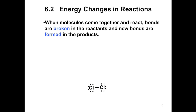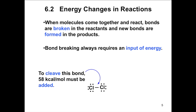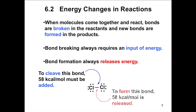For energy changes in reactions, when molecules come together and react, bonds are broken in the reactants and new bonds are formed in the products. For example, 58 kilocalories of energy is needed to break the chlorine-chlorine bond in a mole of chlorine molecules (Cl₂). In contrast, when the chlorine-chlorine bond is formed, 58 kilocalories of energy is released. The amount of energy needed to break a bond is the same amount that is released when the bond is formed. Bond breaking always requires an input of energy, while bond formation always releases energy.